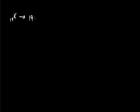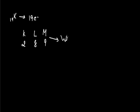Moving after argon, the next atom with atomic number 19 is potassium, which contains 19 electrons. The first 2 go to K shell, the next 8 go to L shell. According to the initial rules, the remaining 9 electrons should move to M shell, giving a configuration of K2, L8, M9. However, this is the wrong configuration for potassium.